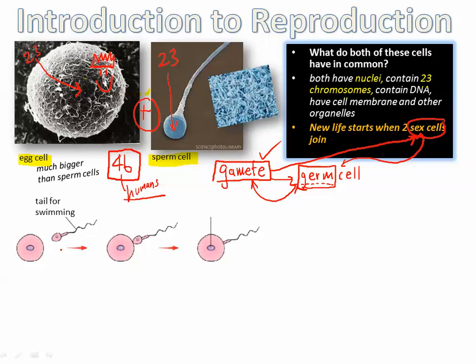Sperm cells are specialized. Another word for specialized is differentiated — see if you can spell that. Differentiated means it has a special purpose; it's not just a normal cell. It has a tail for swimming, and it's got to swim very long distances. We'll learn more about this later.